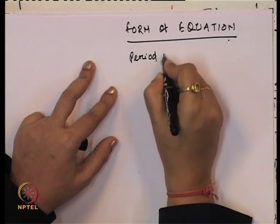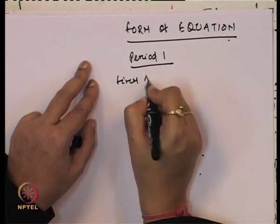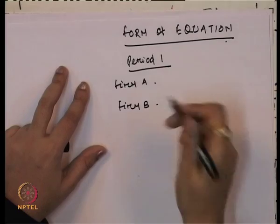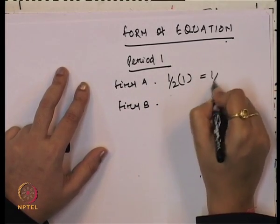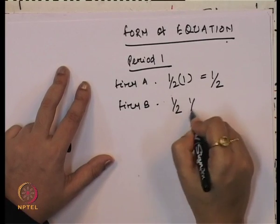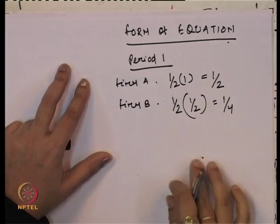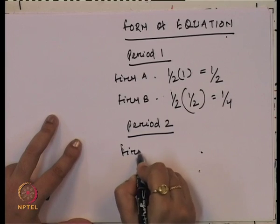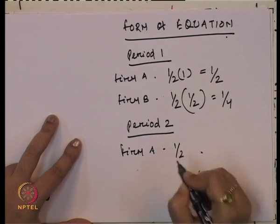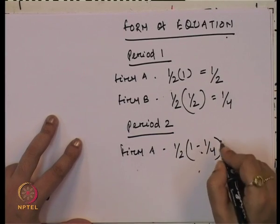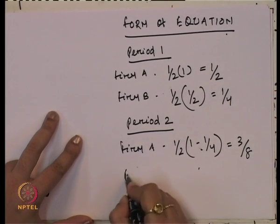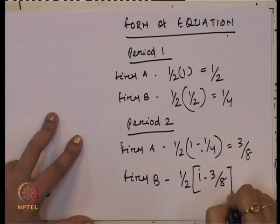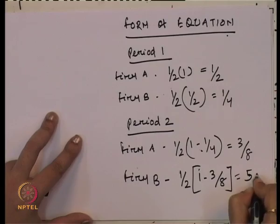In period 1: Firm A produces half the total market. Firm B produces half of the remaining market — that is, half of (1 - 1/2) = 1/4. In period 2: Firm A produces half of (1 - 1/4) = 3/8. Firm B produces half of (1 - 3/8) = 5/16.